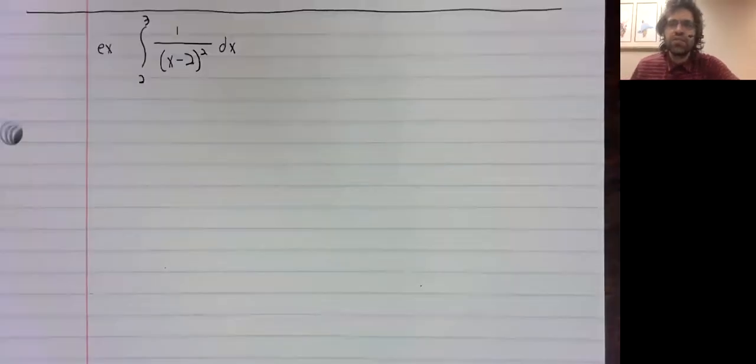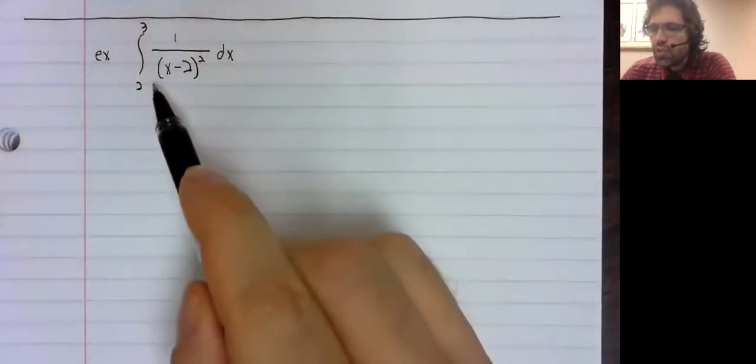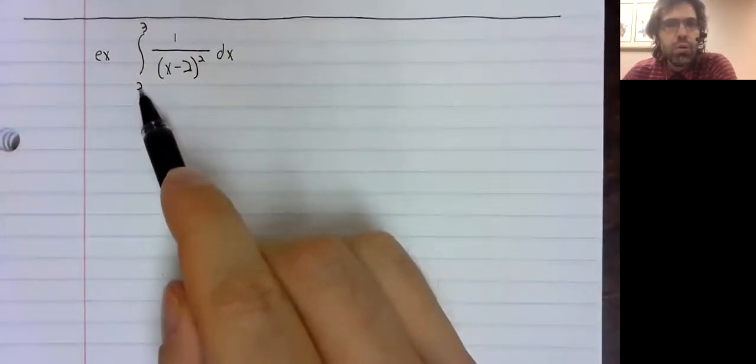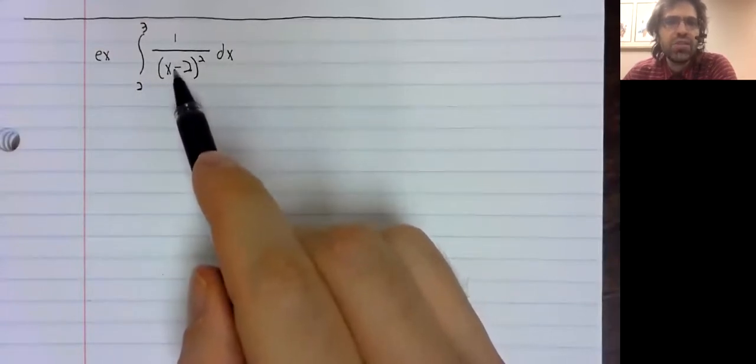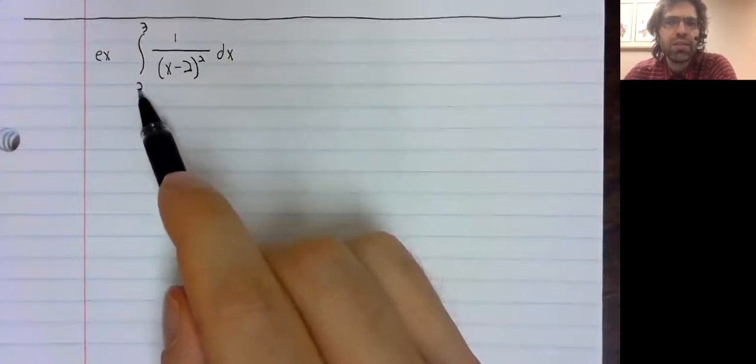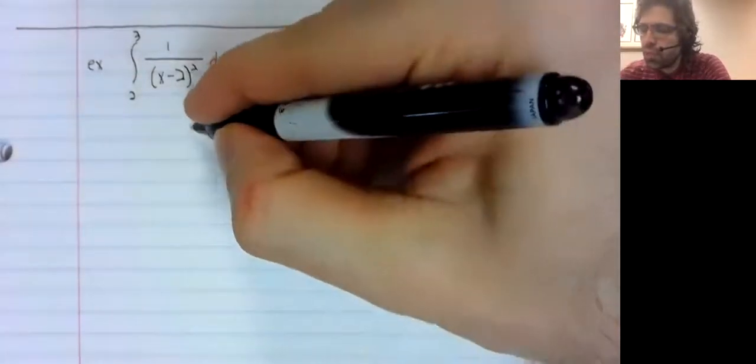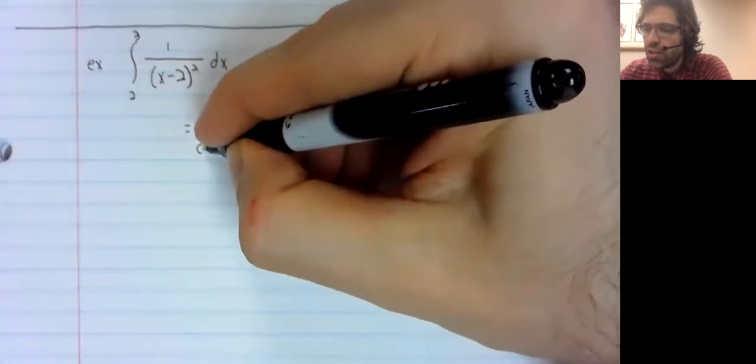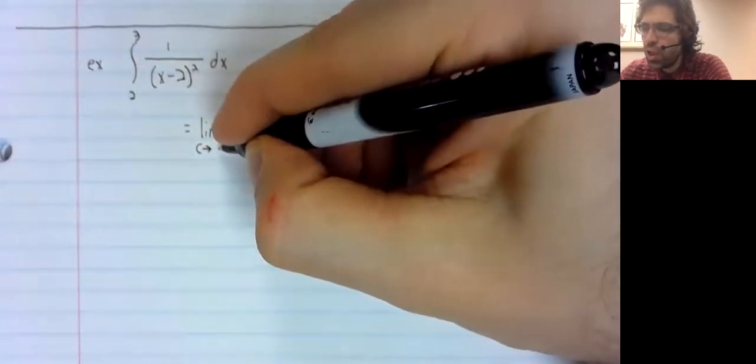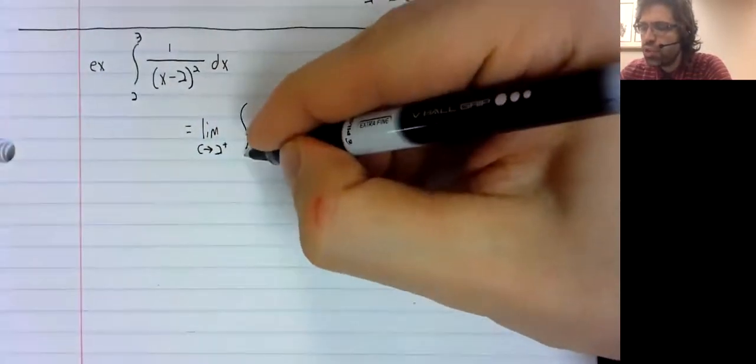Let's investigate another improper integral. Once again, it's this lower limit that makes it improper. We have a division by zero error at this lower limit. There's a vertical asymptote, so once again, it is the lower limit that gets replaced.